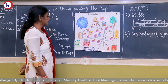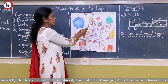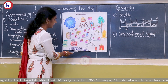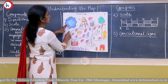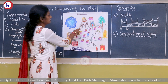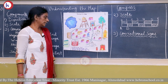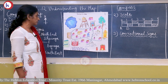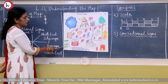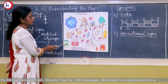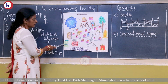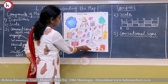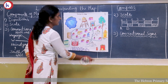Direction of the water tank from the pond: the water tank comes in the eastern side. Direction of the post office from the farm: the farm is in the northwestern side, and the post office is in the opposite direction — the southeastern side.